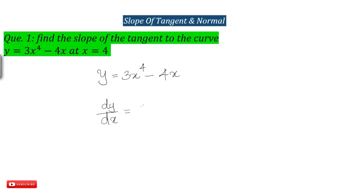Differentiating: dy by dx of 3x raised to 4 gives 4x cube; minus 4 times x gives derivative 1. So dy by dx equals 12x cube minus 4.